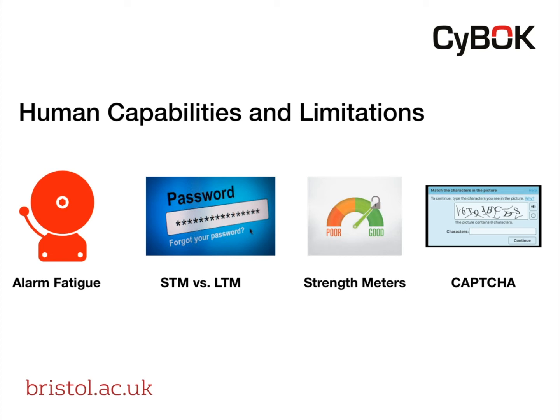One should bear in mind that two-factor authentication has its own limitations — the workload of using one device as an entry point has shifted to now using two devices, which may require people to copy PIN codes from, say, a mobile phone onto a computer screen or carry a fob. There are studies showing the limitations and usability challenges of two-factor authentication. Other mechanisms to help users include strength meters and password managers. Password managers are an interesting way to reduce the requirement to recall many complex passwords. Strength meters are designed to help users write stronger passwords but effectively add extra work, and their usability issues have been studied quite extensively.